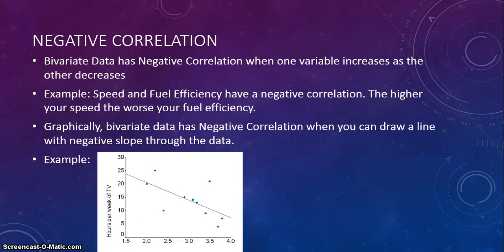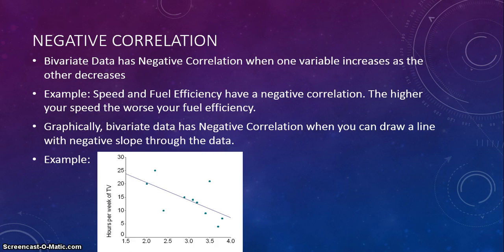Negative correlation: bivariate data has negative correlation when one variable increases as the other decreases. For example, speed and fuel efficiency have a negative correlation — the higher your speed, the worse your fuel efficiency is going to be. Graphically, bivariate data has negative correlation when you can draw a line with negative slope through the data, as shown in our example here.